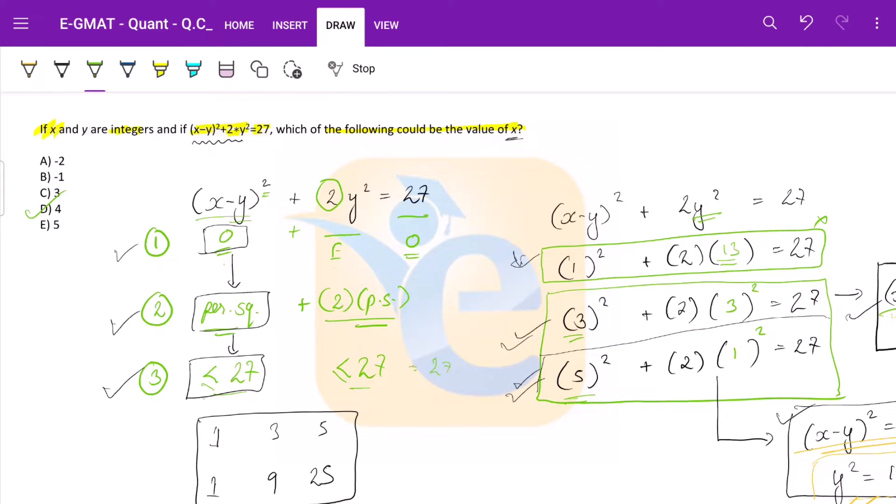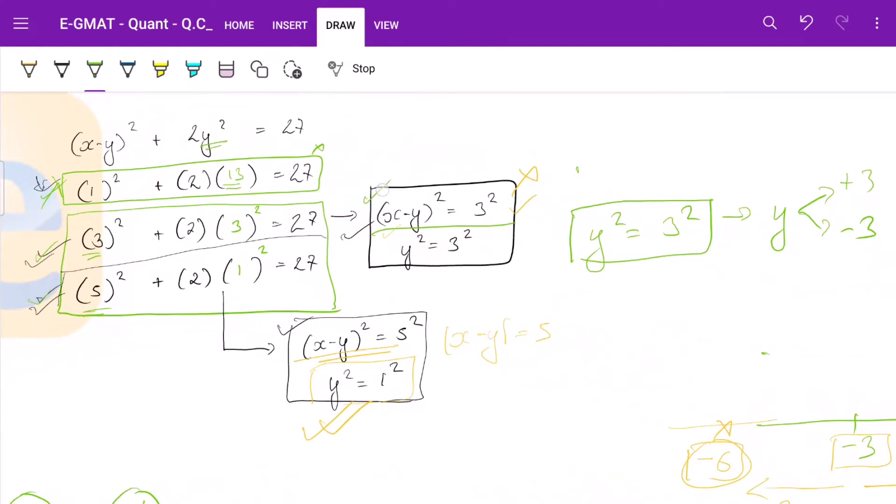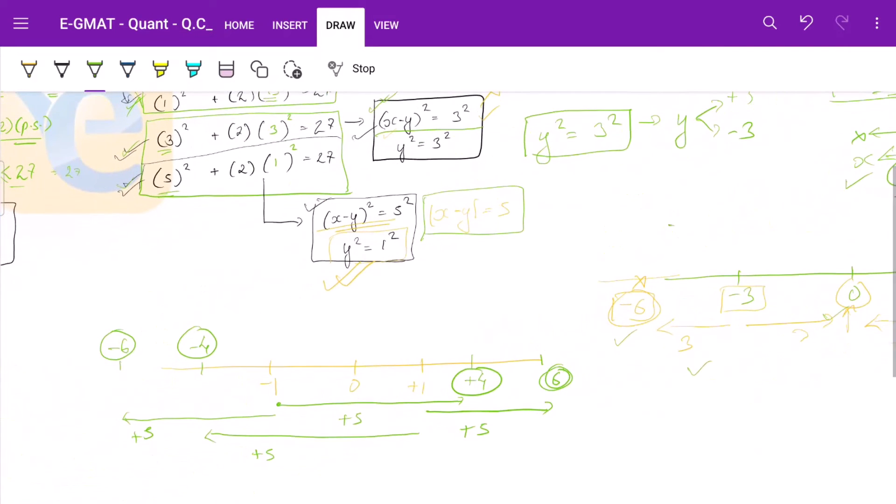Don't do so much of equations because there are lot many plus minuses. You will get confused. Simply take out inferences. Make your cases. Eliminate cases. Understand the meaning of equation in terms of its physical significance. Here, it is the distance between two points in terms of modulus. Draw your number line. See where the possible values are. Match with options. Move to another case and get your answer.